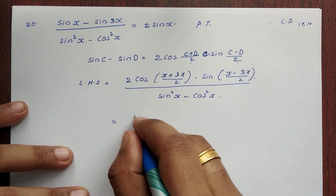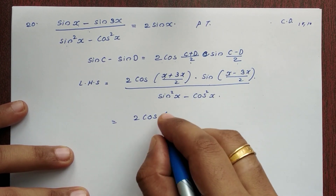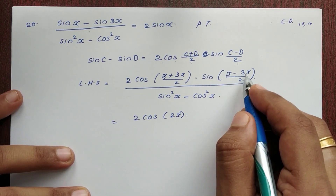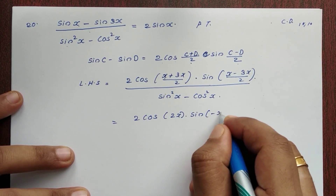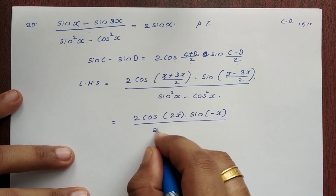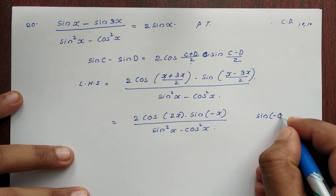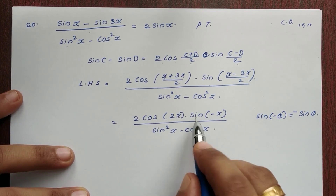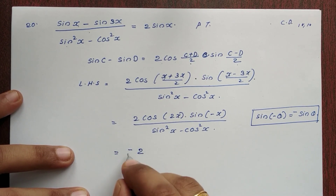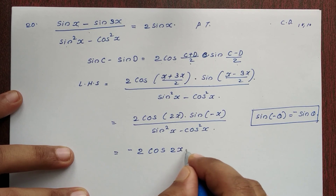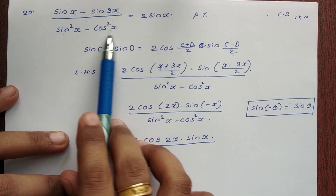So this simplifies: x plus 3x is 4x divided by 2 gives 2x, and x minus 3x divided by 2 gives minus x. So the numerator becomes 2 cos 2x into sin(minus x), which equals minus 2 cos 2x into sin x, the whole divided by sin squared x minus cos squared x.